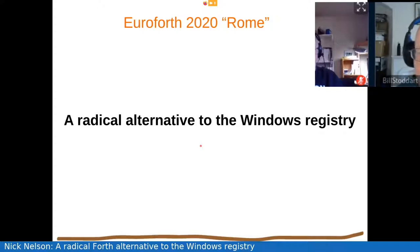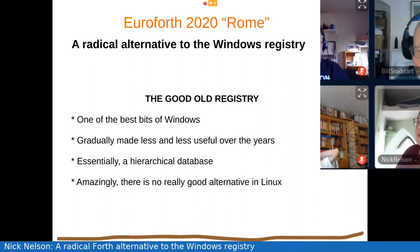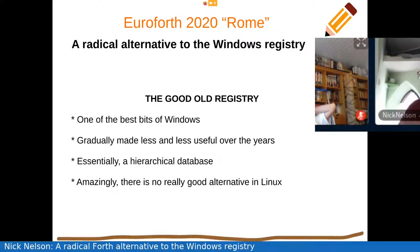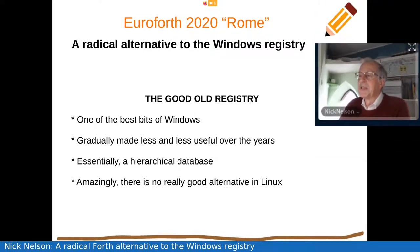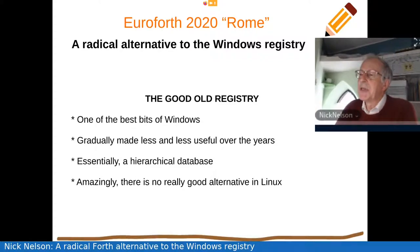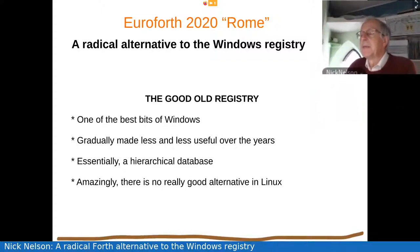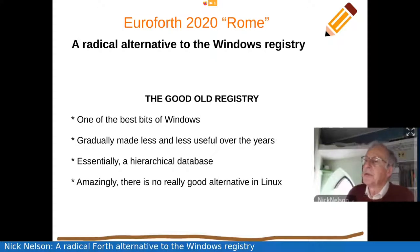So when we started moving our main application away from Windows and into Linux, we had been using the Windows registry quite extensively. We thought this was a really good bit of Windows. The Windows registry, if you're not familiar with it, is a hierarchical database, basically. Unfortunately, Microsoft gradually made the registry less and less useful over the years. We were really hoping that when we moved to Linux there would be some equivalent, but there really isn't. There's no good hierarchical database that we are aware of in Linux.